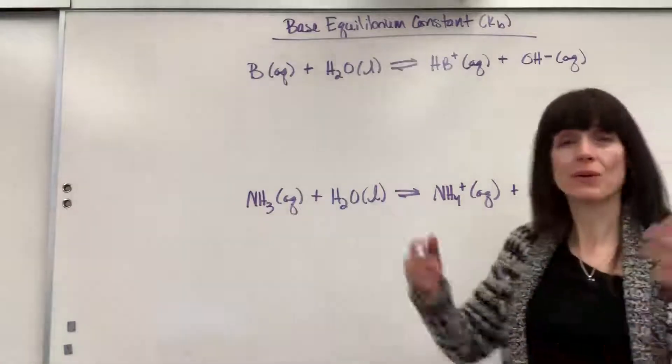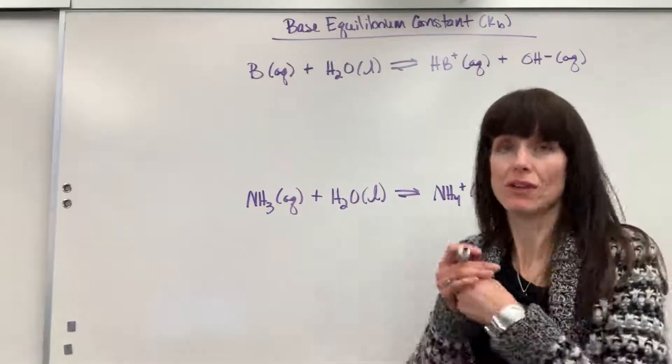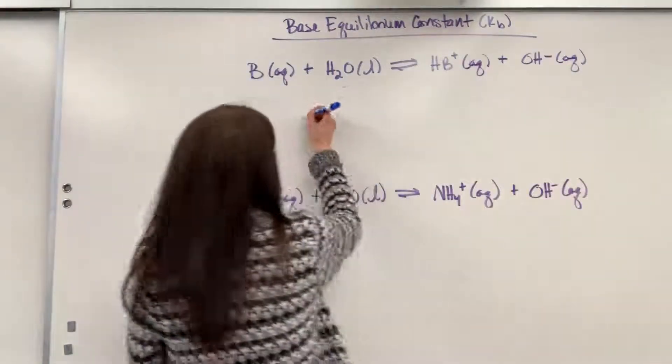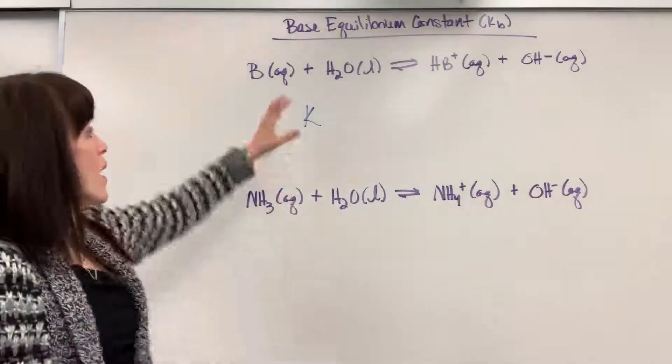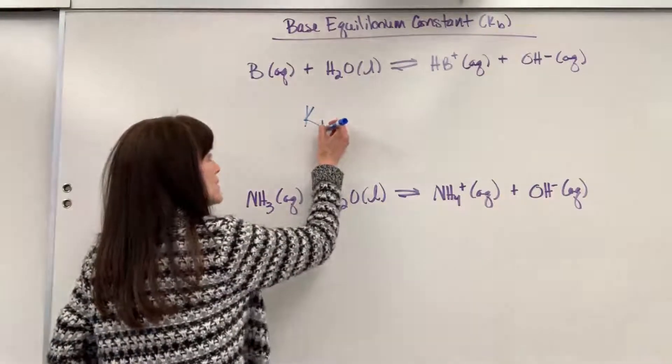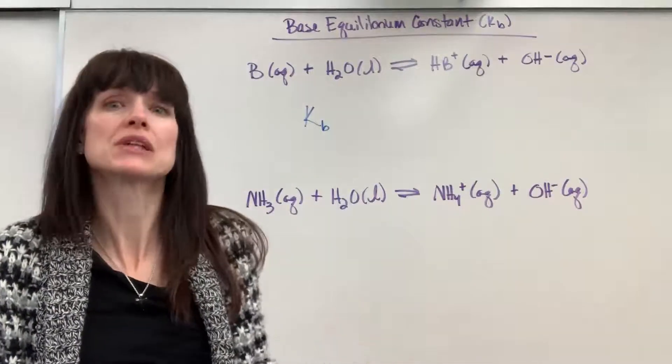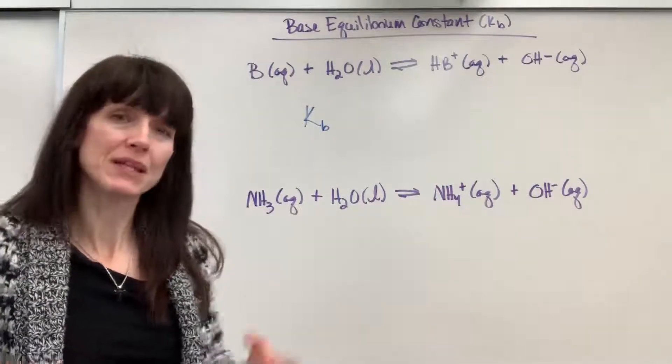Okay, so we're going to write the equilibrium expression, and as we've done in lots of videos, it's going to be K. Now, we classify this as a base because it's base plus water, so I put a subscript B. There's nothing magical about that, I could just leave it K. I'm just being specific